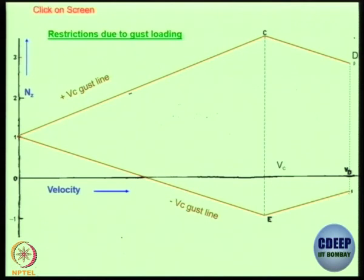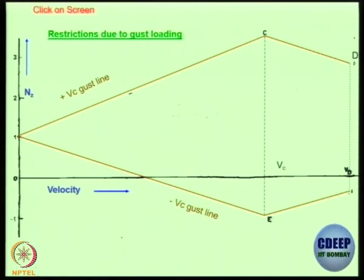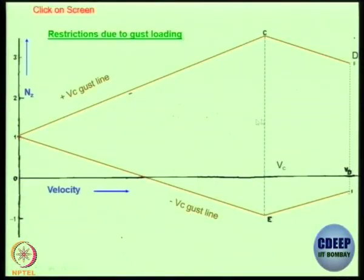This line is basically from the line 1 onwards, 1 because it is level flight. From level flight line, from this horizontal line, this shows you the delta NZ because of gust at various speeds and when you go beyond VC up to VD, the values are half, 12.5 and 25.